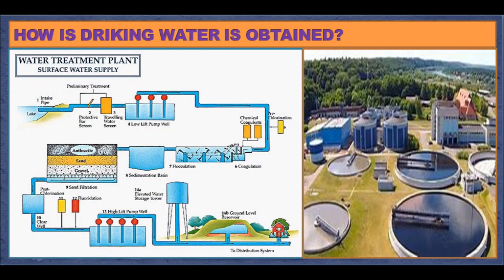How is drinking water obtained? Water supplied to our houses is treated through several separation processes. First, solid impurities are removed by sedimentation and decantation — sometimes loading with alum is done to speed up sedimentation. Second, the decanted water is passed through sand filters to further purify it. Third, a disinfectant, chlorine, is added to kill germs.